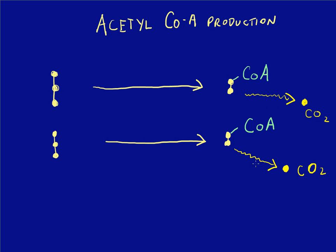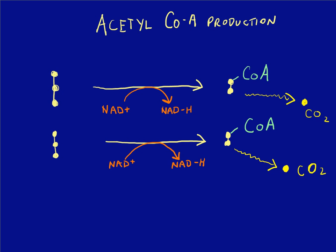In each of the two molecules, that third carbon gets released as carbon dioxide. In the process, there's a handoff where coenzyme A joins with each of these two-carbon acetyl groups to produce acetyl-CoA — that's why we call it acetyl-CoA production. This process doesn't really require or make any ATP; there's no ATP involved at all.